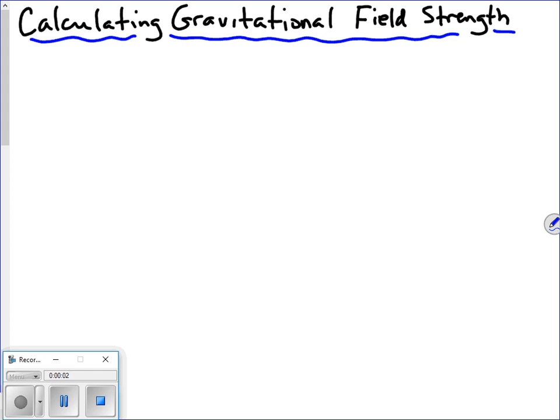Today's lesson is all about calculating gravitational field strength. Gravitational field strength is calculated using the formula: little g is equal to capital G times M divided by r squared. What we need to know, of course, is what each of these letters stands for.